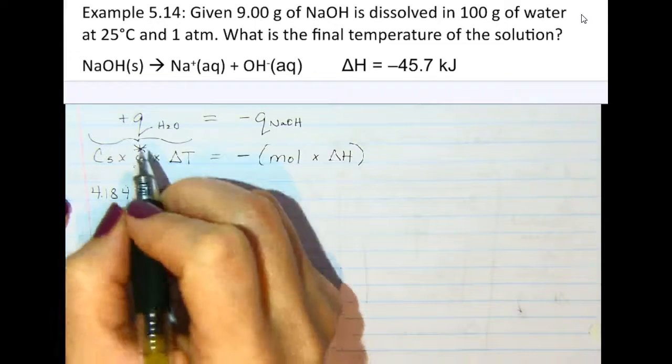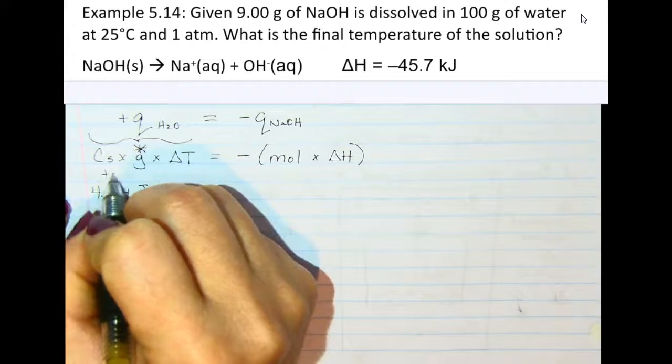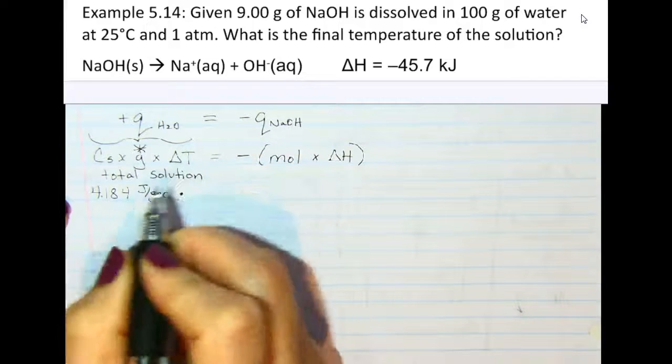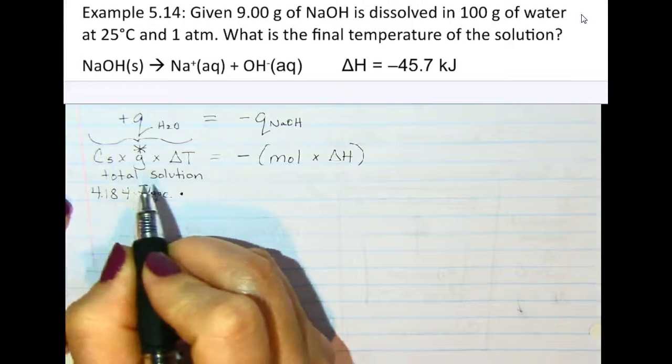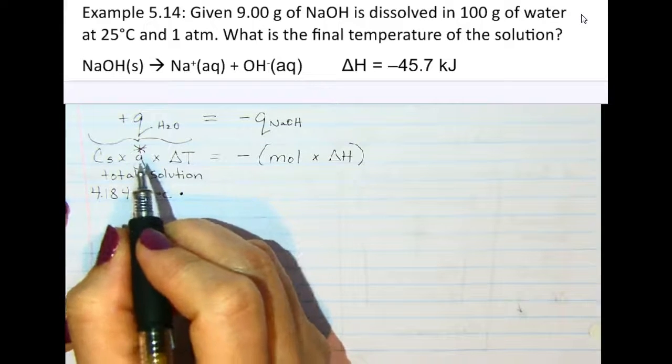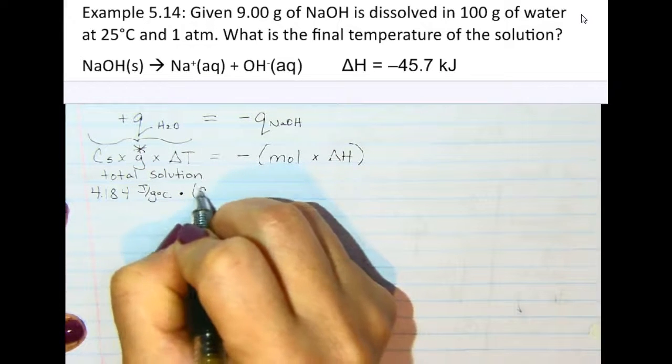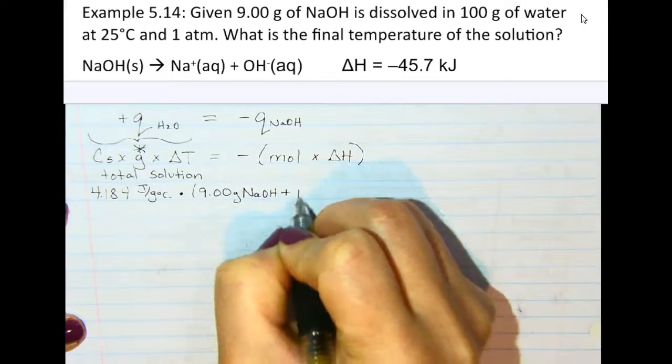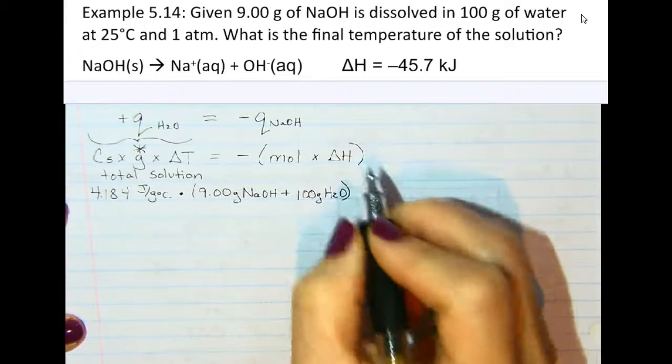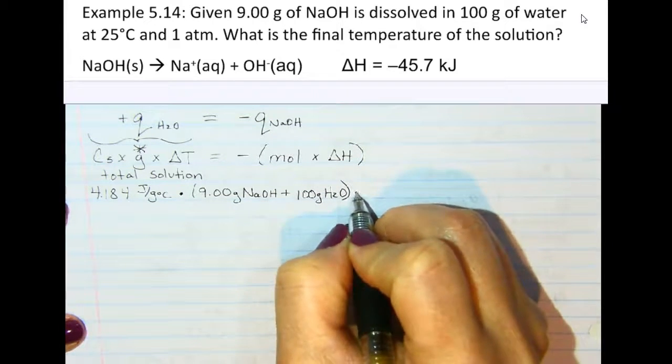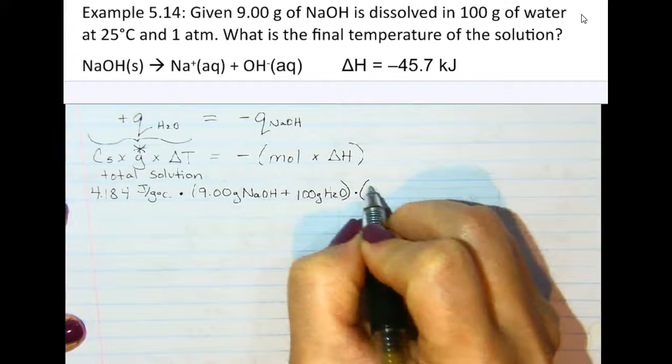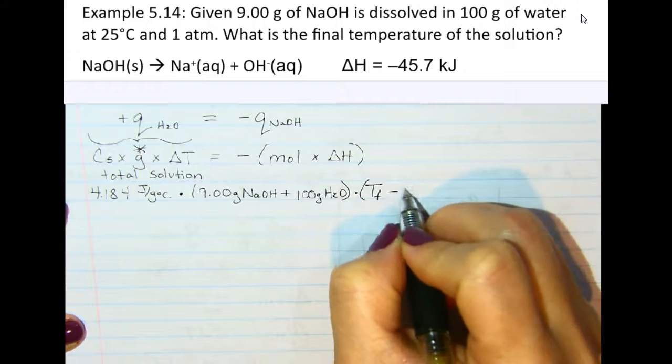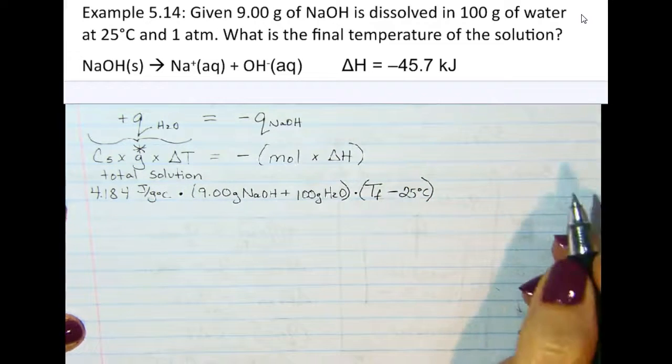However, what we have is the mass of the entire solution that we have to take into consideration, because the temperature change is of the mass of the entire system. So the mass here is going to be 9.00 grams of the sodium hydroxide plus the 100 grams of water. We're going to multiply this times the change in temperature. We don't know the final temperature, but the original temperature was 25 degrees Celsius.